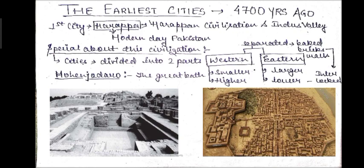This civilization is also called Harappan Civilization, because the first site — the first city which was discovered — was Harappa. It is also called Indus Valley Civilization because many of the cities were on the bank of the Indus River. This Harappa city is now in Pakistan, after the separation of Pakistan from India. There are many specialities about this civilization, so it is important to study this topic thoroughly.